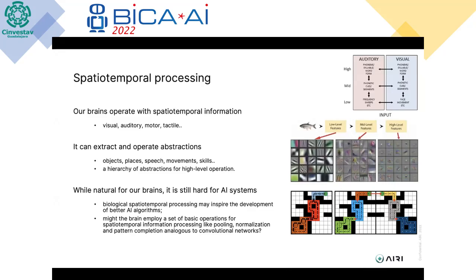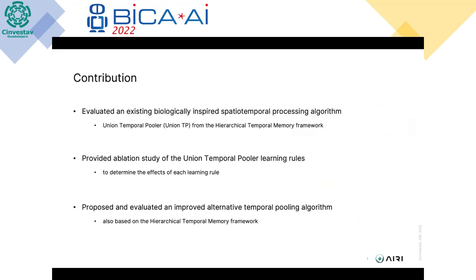The way biological brains perform spatial-temporal processing may inspire us to develop better AI algorithms. The main goal of our work is to study ways of organizing spatial-temporal processing using a biologically plausible model of the human neocortex called Hierarchical Temporal Memory (HTM). This HTM model is supplied with a framework of different algorithms, one of which is a spatial-temporal processing algorithm called the Union Temporal Pooler.